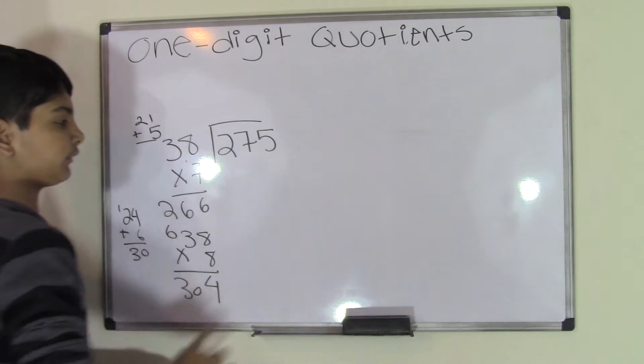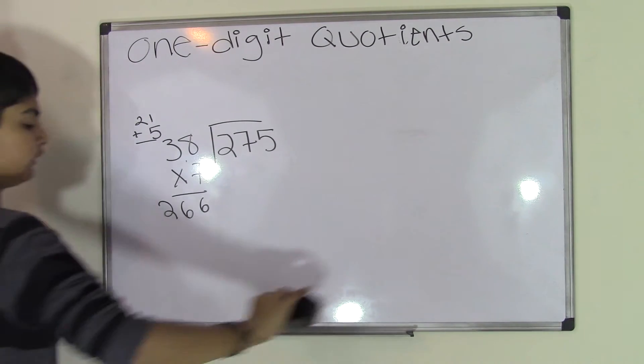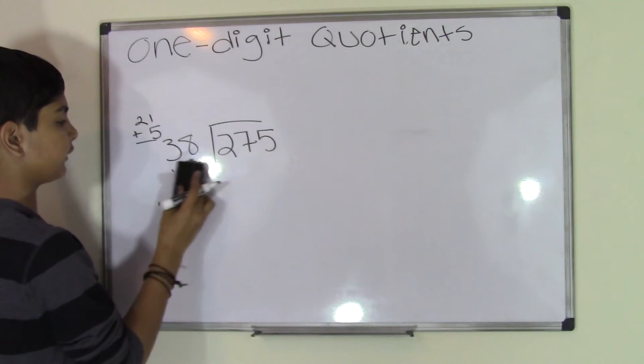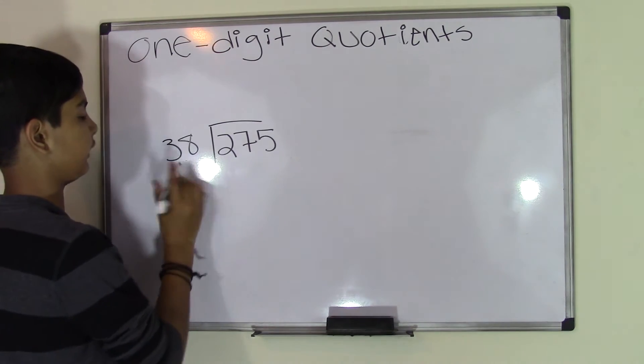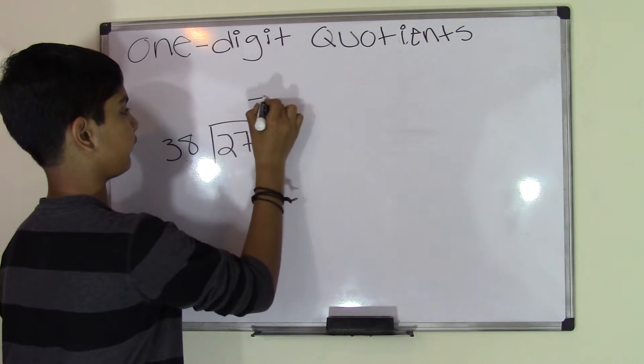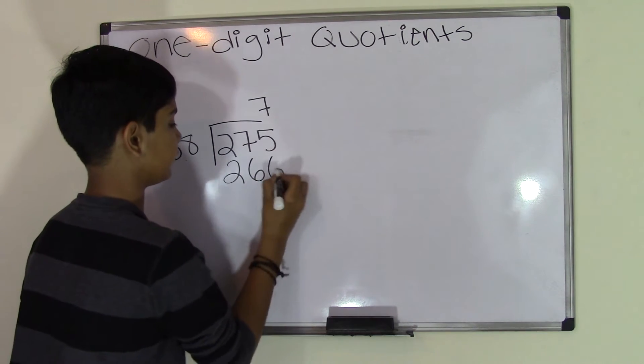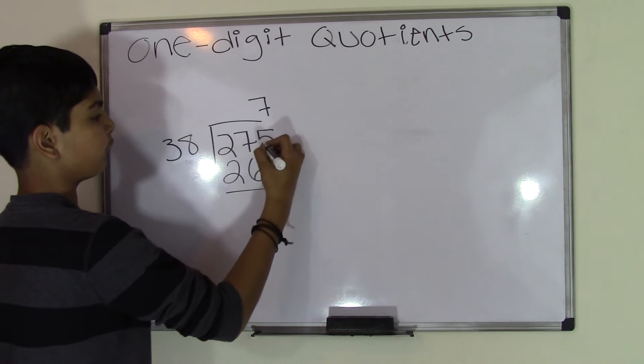So let me erase that. Now we have 38 times 7 and we get 266, and now we subtract.